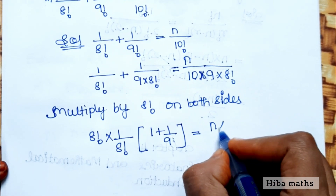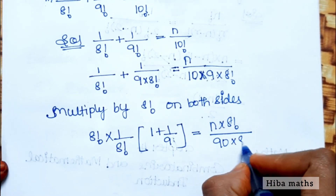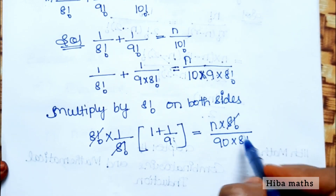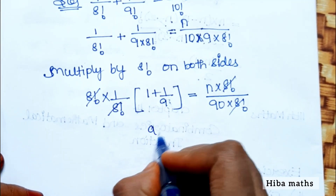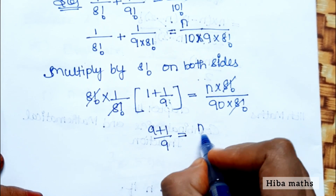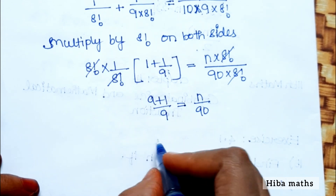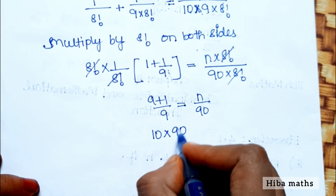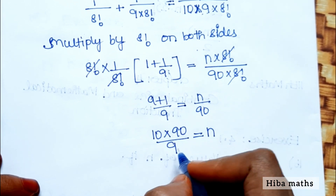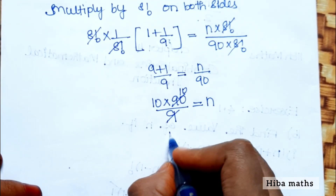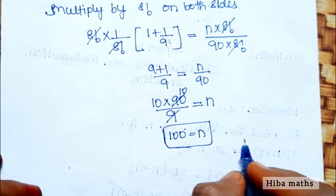After cancellation, we get 1 plus 1/9 equals n divided by 90. The left side simplifies: 9 plus 1 over 9 equals 10/9. So 10/9 equals n/90, which gives n equals 90 times 10 divided by 9, and therefore n equals 100.